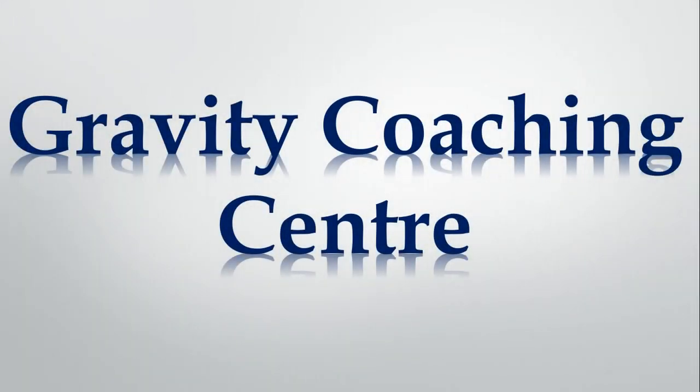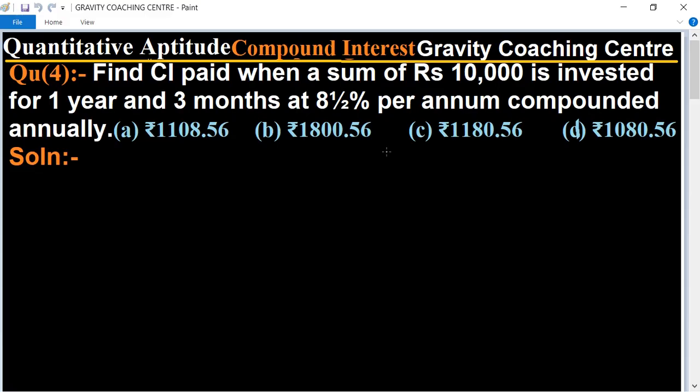Welcome to our channel, Gravity Coaching Centre. Quantitative Aptitude, chapter Compound Interest, question number 4: Find CI paid when a sum of Rs 10,000 is invested for 1 year and 3 months at 8½% per annum compounded annually.